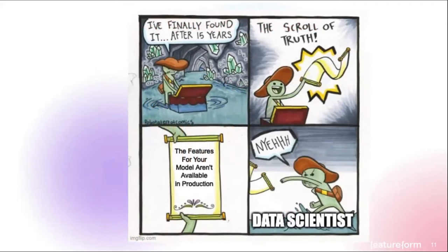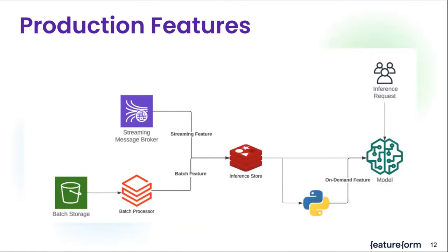From a data scientist's perspective, they'll come up with all of these features, and then there's this huge blocker of how to get them into production. When you're experimenting it's common to use a sample and unscalable patterns — just use pandas on your laptop. But when you move features into production, you start having to work with actual data systems, deal with streaming data, batch data, on-demand features, and all this needs to produce signals at production time in a way that is very low latency.